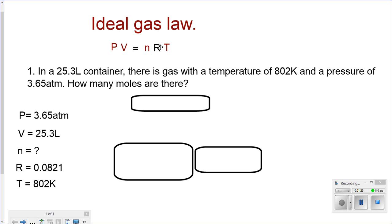My R is a given value of 0.0821 when I have atmospheres, and my temperature is 802 kelvins, nothing to convert here.